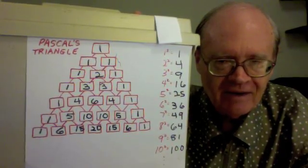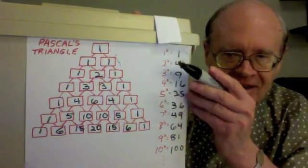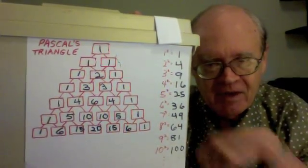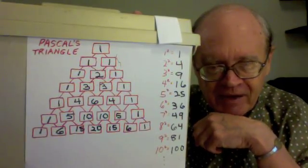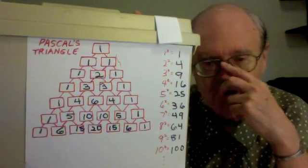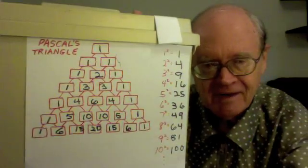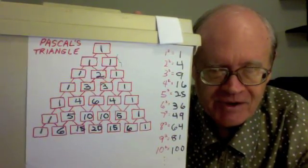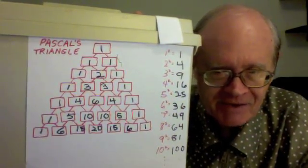Can we find a list of square numbers, these black numbers here, in Pascal's triangle? No, we can't.